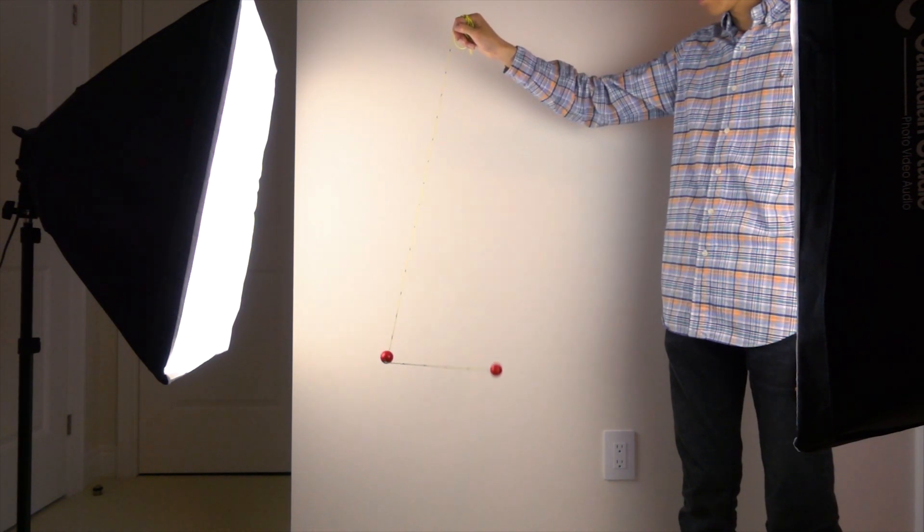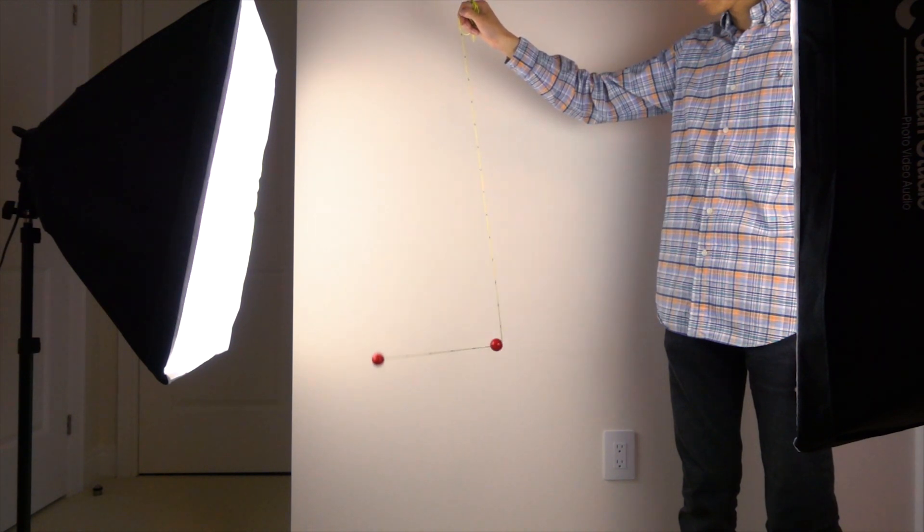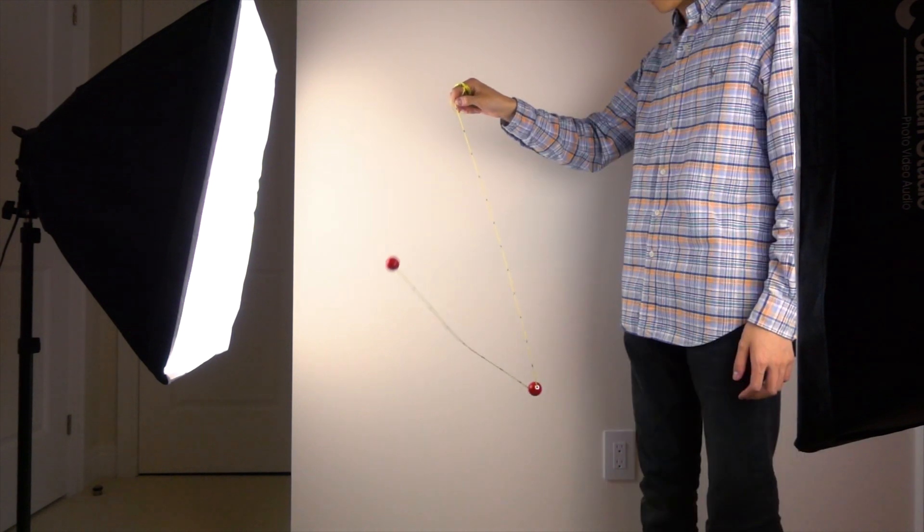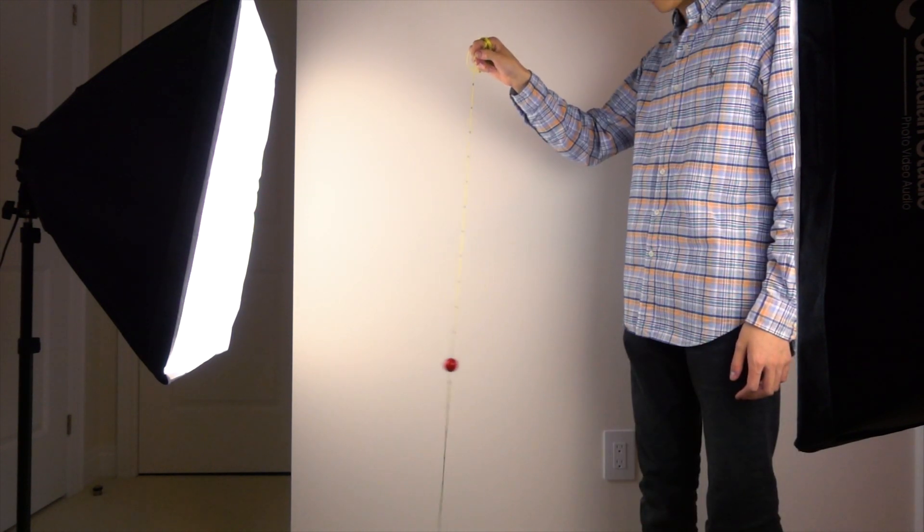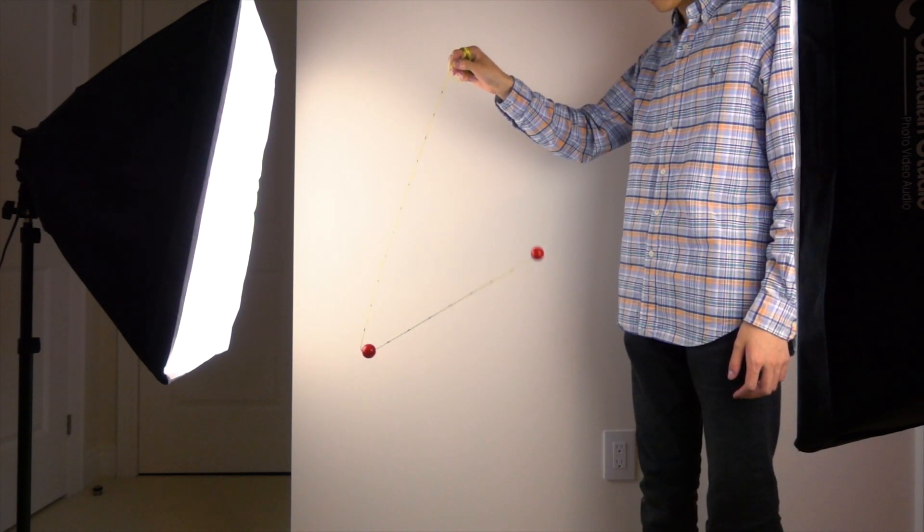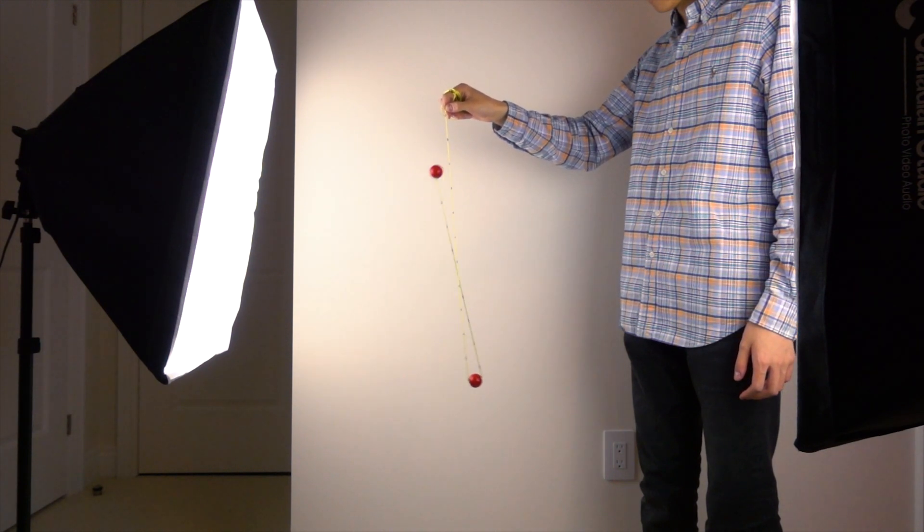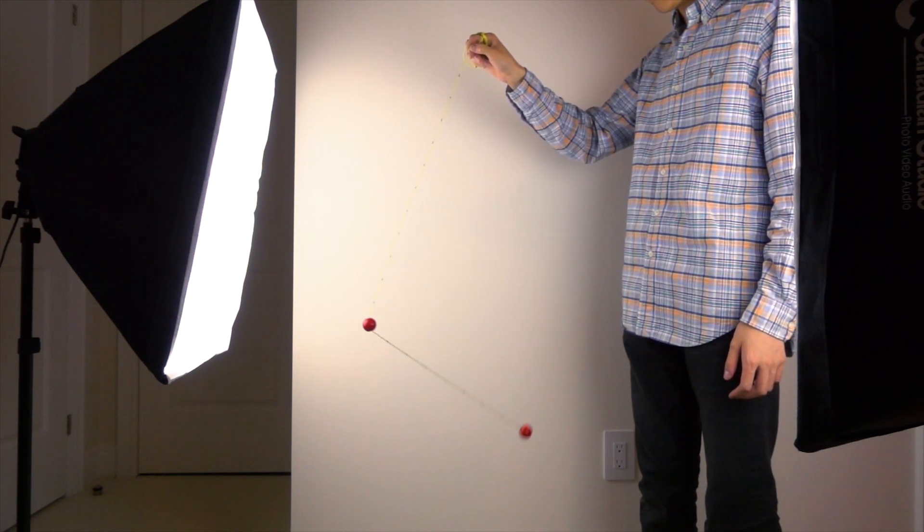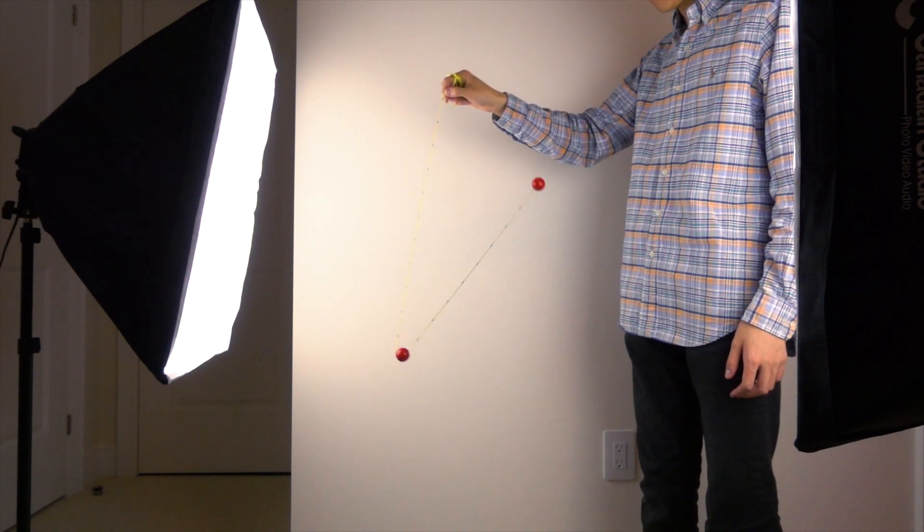We can also see that the top portion and bottom portion of the string moves in very different ways. The top portion swings a bit like a pendulum. The bottom portion are in circular motion around the top ball. Knowing the differences, we can also conclude that these two motions also have the same period.